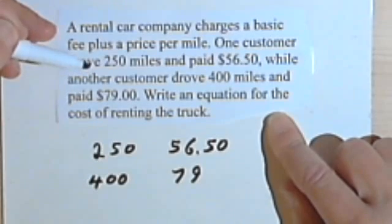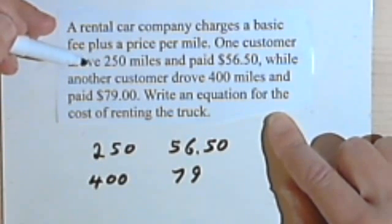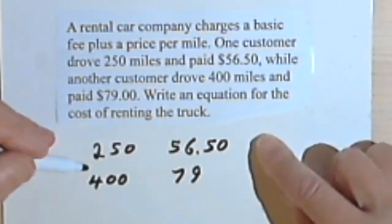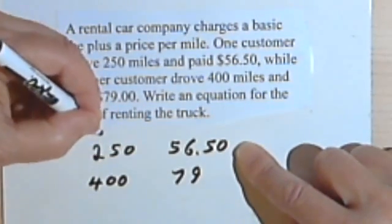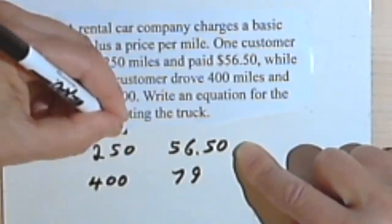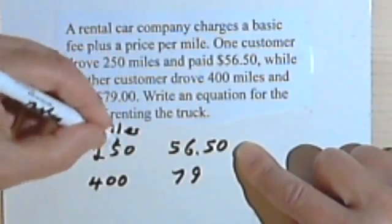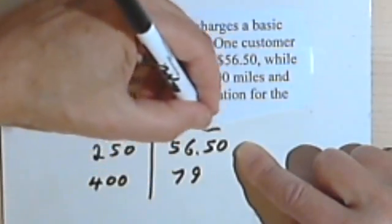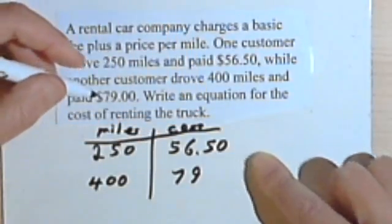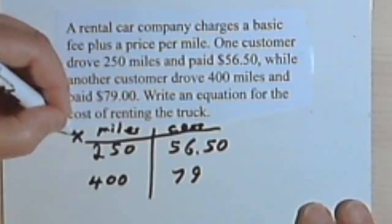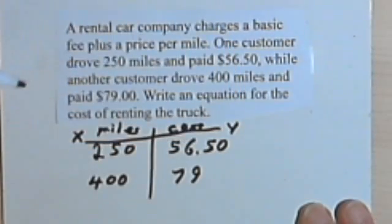Well, we don't have a slope and we don't have a y-intercept. So let's see what we do have. We've got this - so this is miles, this column here, and this is cost.